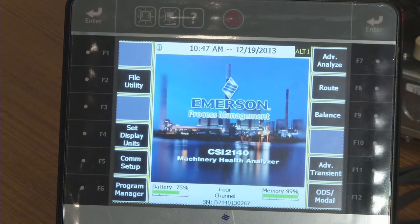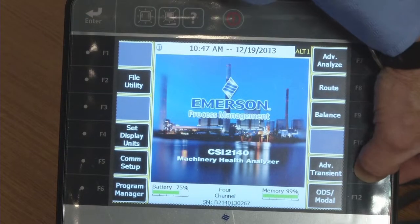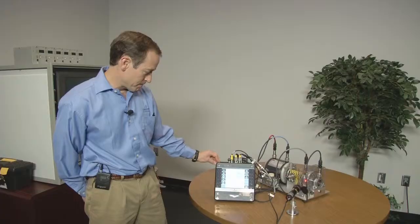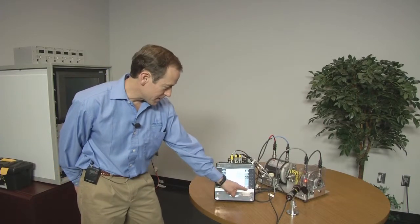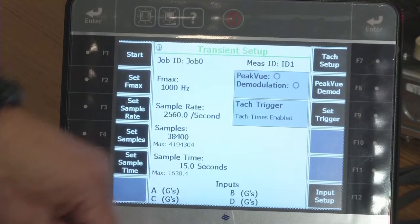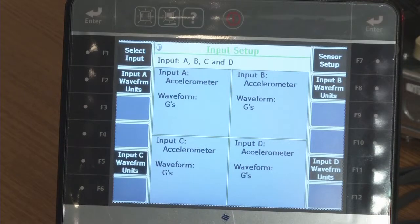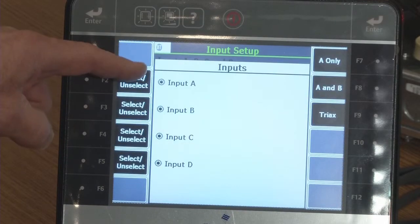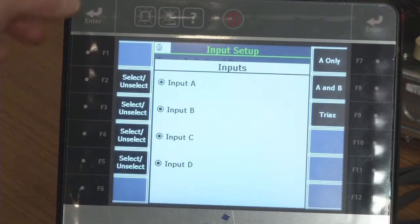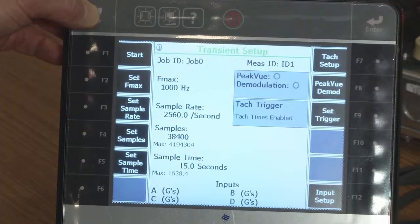To begin transient analysis, from the home page of the 2140, click F11 to open up transient, and the first thing you want to do is verify that you have all four sensors programmed to collect data. From the input setup, I see that I've got all four accelerometers selected. I see that I'm going to take 15 seconds of data, and I'm going to have an Fmax of 1000 Hz.